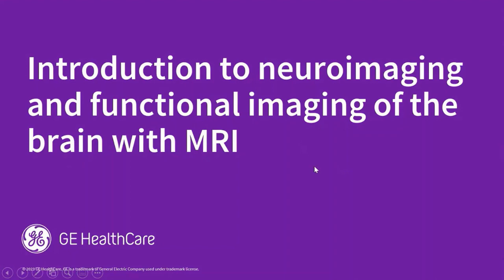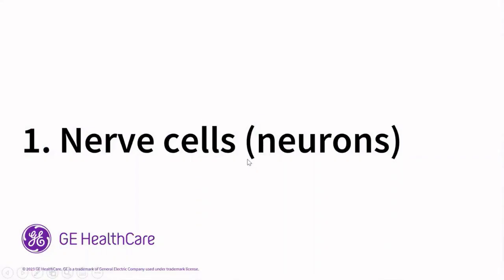This is about brain activity — an introduction to neuroimaging and functional imaging of the brain with MRI, magnetic resonance imaging. First off, the building blocks of the brain are what are known as neurons, also known as nerve cells.